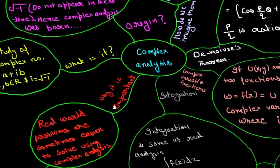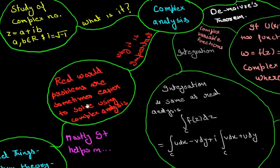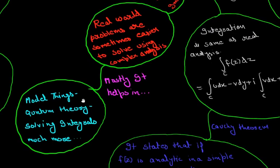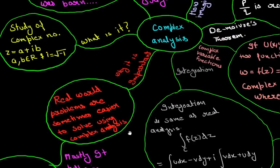Now let's go to this branch. There are some small branches and some long branches like this one. So now why it is important? Real world problems are sometimes easier to solve using complex analysis. It mostly helps in modeling things, quantum theory, solving integrals and much more. Now this is the end of this branch. So let's go back.